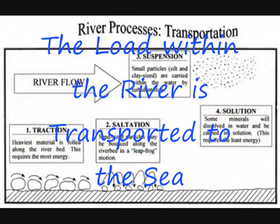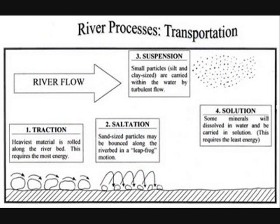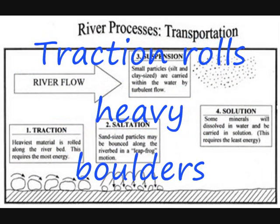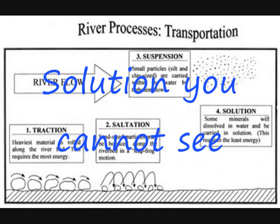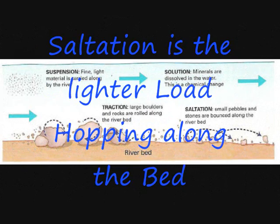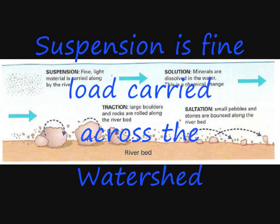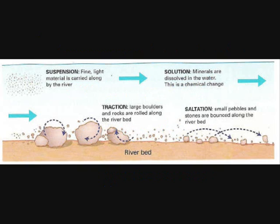The load in the river is transported to the sea. Traction rolls heavy boulders. Solution you cannot see. Saltation is the lighter load, hopping along the bed. Suspension is fine load carried across the watershed.